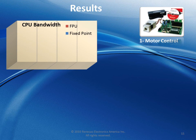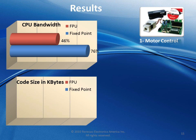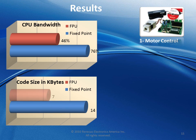From a CPU bandwidth point of view, a fixed point implementation requires 76% of the CPU, while the floating point equivalent application requires only 46% of the CPU. From a code size point of view, the fixed point implementation requires 14KB versus 7KB with the floating point implementation. What are the conclusions? Usage of the FPU not only improves bandwidth and code size, but also overall performance.